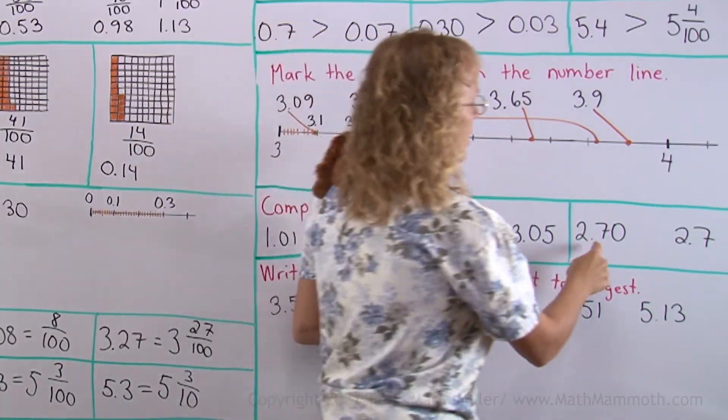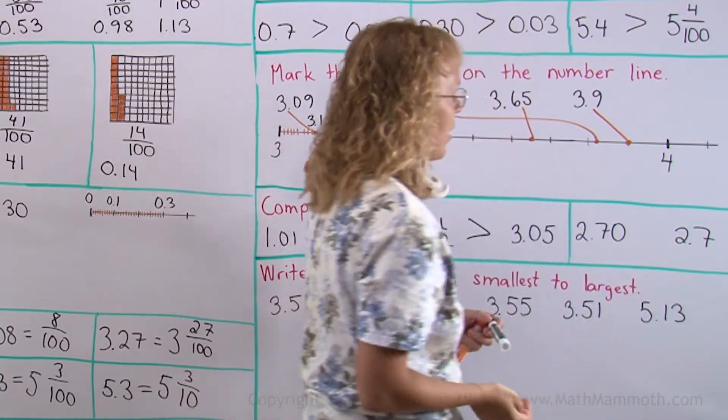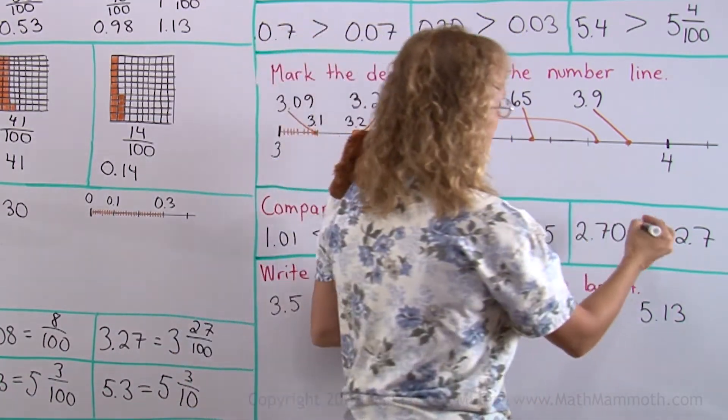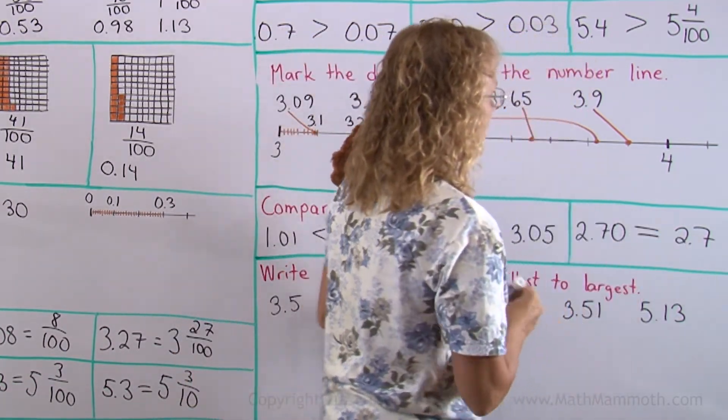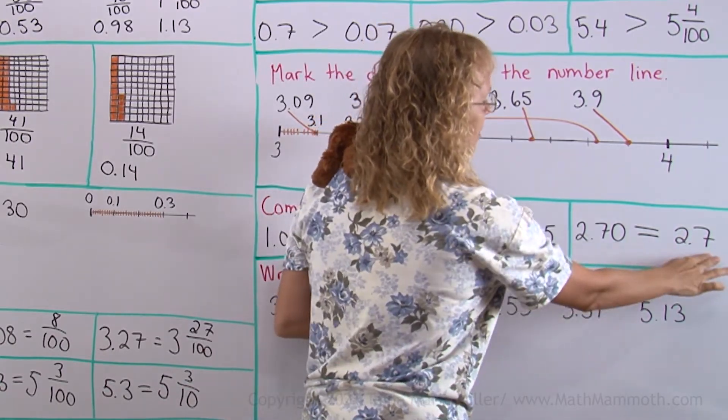2.70 and 2.7. These happen to be equal. Okay. 70 hundredths is the same as 7 tenths. And lastly we will write these numbers in order from smallest to largest.